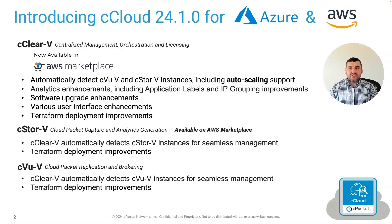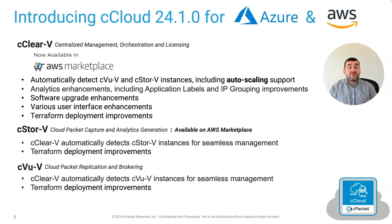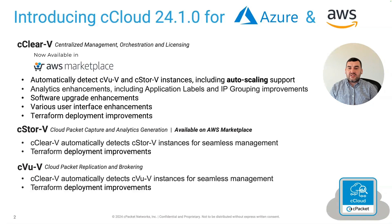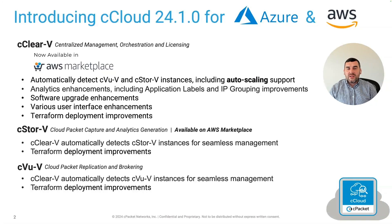Moving on to C-Store V, which is our cloud packet capture and analytics generation platform — available already on the AWS marketplace — we now have the ability to detect C-Store V instances that are spun up as new instances, whether as part of an auto-scaling group or as part of a maintenance procedure to add additional C-Store V instances in the back-end pool. We can now automatically detect C-Store V and license and manage those virtual appliances right from CClear V without any user intervention required. We also have the same Terraform deployment improvements across all three of our C-Cloud products.